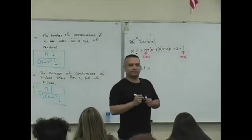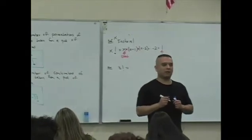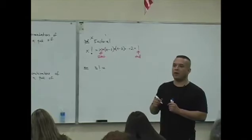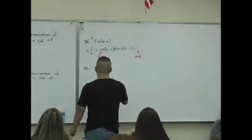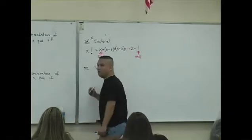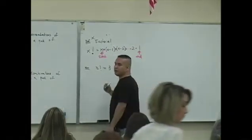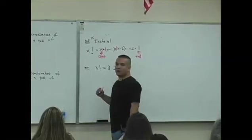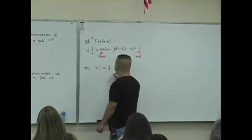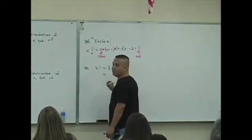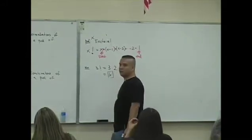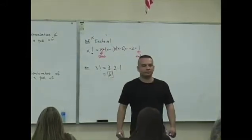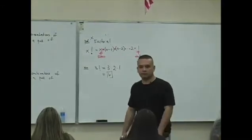For example, what is three factorial? You start with three and then you count backwards. What's the next number? Two. And then you end with one. Three times two times one, what is it? Six.